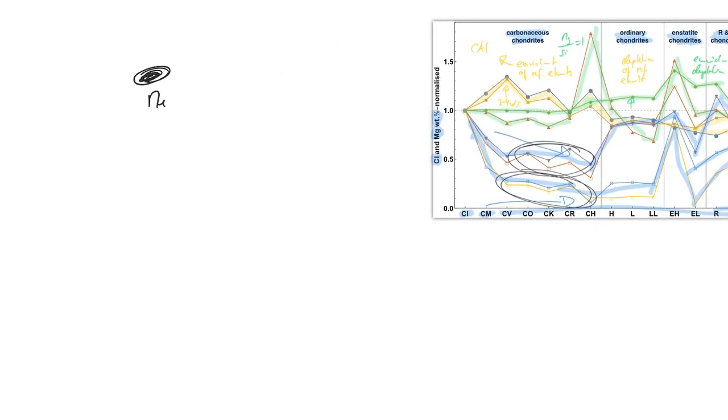Say there is a meteorite, and it's possible that it lost volatile elements due to evaporation. It's then also possible that the meteorite formed in a reservoir. So this is some reservoir, and this is the meteorite.